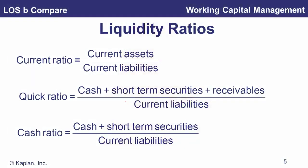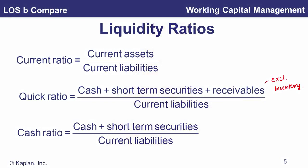Liquidity ratios measure the company's ability to meet short-term obligations as they fall due. The current ratio is current assets over current liabilities. The quick ratio is the same but excludes inventory, because inventory may not be that liquid depending on the industry. The cash ratio goes further, also excluding accounts receivable, and looks purely at cash and short-term securities over current liabilities.